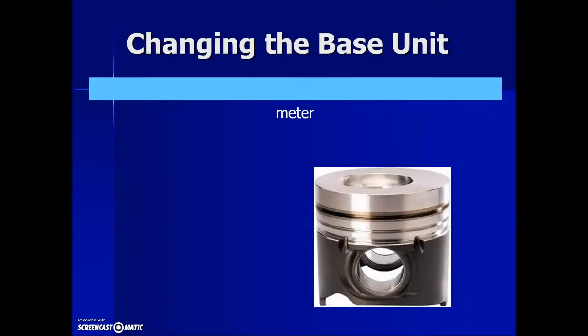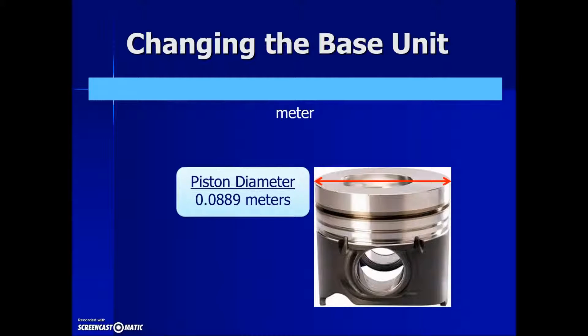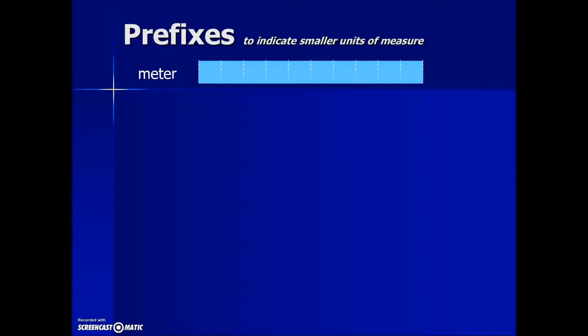If we're dealing with an example of length, the base unit is meter and here we have a piston that has a diameter of 0.0889 meters. This would be the equivalent of saying that this diameter was a fraction of a mile. In the English side, we would convert this down to inches so that we could have a better understanding of what the measurement is. In the same context, we're going to do this in the metric system only by the use of prefixes.